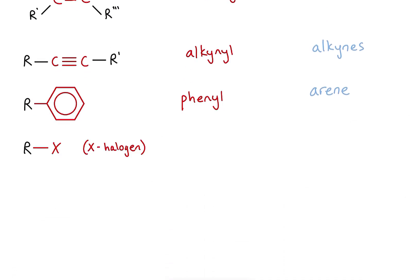Here we've got an X. X is not the symbol of any element in the periodic table — it's actually a general symbol for any halogen, so that's group 17 elements: fluorine, chlorine, bromine, iodine — it could be any of those. For that reason, this functional group is called the halogeno functional group, and it would belong to a class known as the halogenoalkanes, assuming that the rest of my molecule was just carbons, hydrogens, and single bonds.